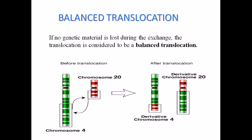The two types of translocation are balanced and imbalanced. In balanced translocation, after the translocation the length of both chromosomes becomes roughly the same. For example, this green chromosome is pretty long while chromosome 20 is very short. If a longer portion of chromosome 20 is translocated with a shorter portion of chromosome 4, and a longer portion of chromosome 4 is transferred to chromosome 20...